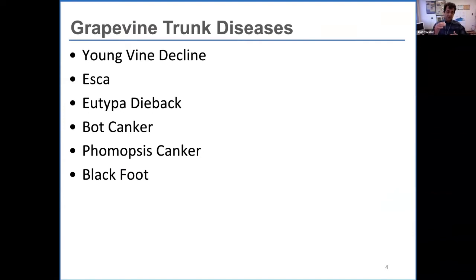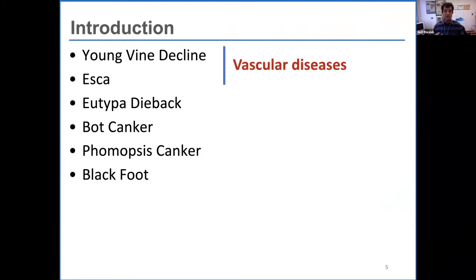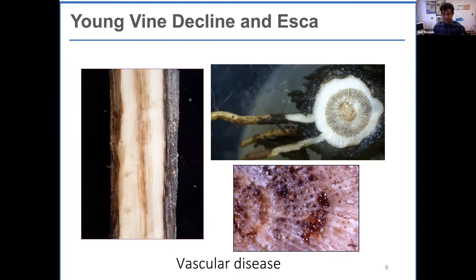When we look at young vine decline and ESCA, which are also known as vascular diseases, these pathogens get into the grapevine and colonize within the vascular tissues, moving up and down in those woody tissues. In the meantime, the grapevine responds to infection by producing gumming and tyloses, which try to prevent pathogen movement but actually cause girdling in the xylem tissues, resulting in wilting of the grapevine.